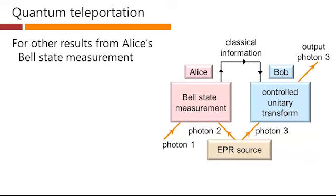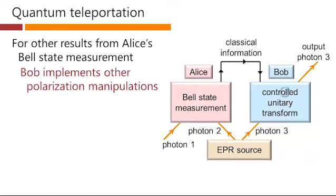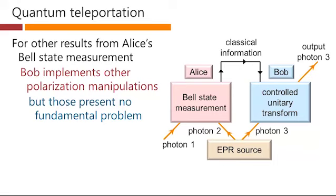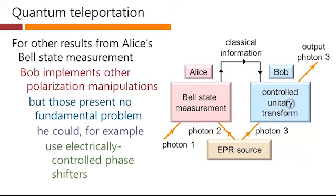For other results that Alice might have got from her Bell state measurement, Bob implements other polarization manipulations over here. And this presents no fundamental problem. He could, for example, use electrically controlled phase shifters here that can operate quite quickly.